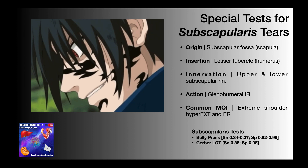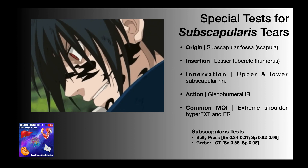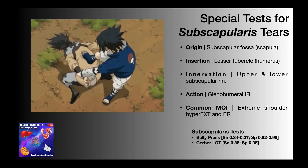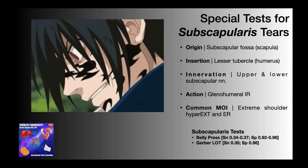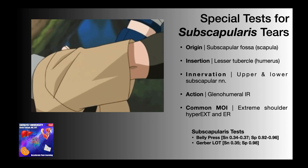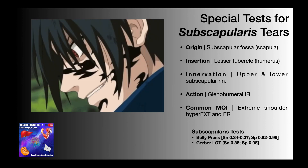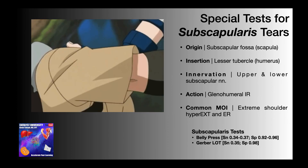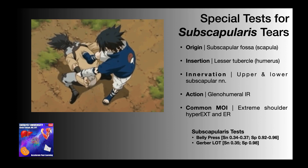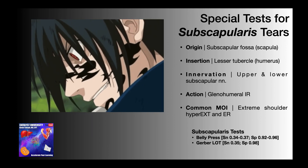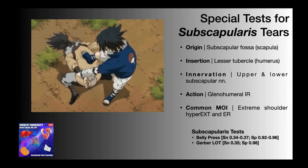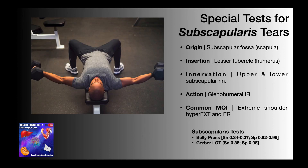As opposed to the supraspinatus and infraspinatus muscles, which are susceptible to degeneration by aging, the subscapularis muscle is a lot more robust and requires larger forces to cause any significant damage. The most common mechanisms of injury would be extreme shoulder hyperextension, like you see here in this short clip, and also extremes of external rotation.